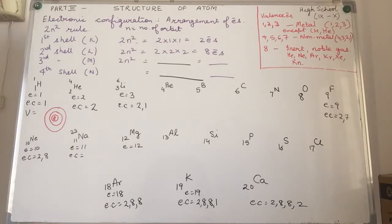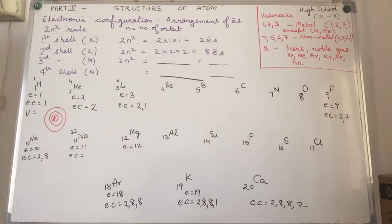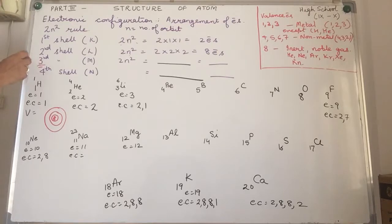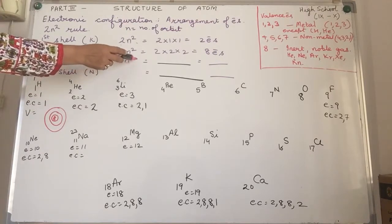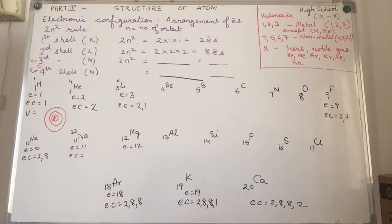The first energy level can hold a maximum of 2 — it can have 1 or even none, but maximum 2. For the second energy level, N is 2: 2×2×2 = 8 electrons. Now try calculating the third shell where N = 3. Also calculate the fourth energy level where N = 4, applying the formula 2n² — that means 2×4×4.